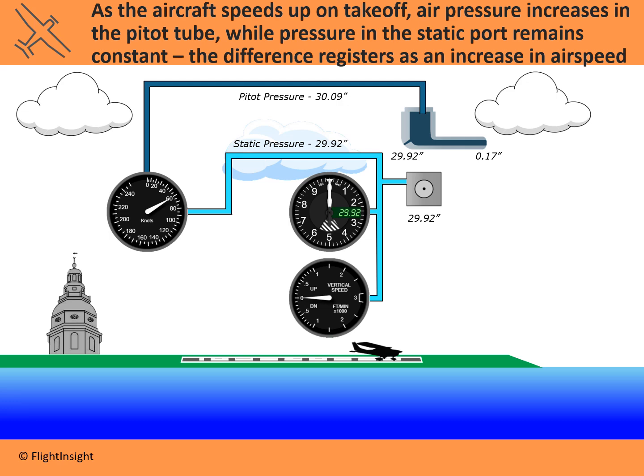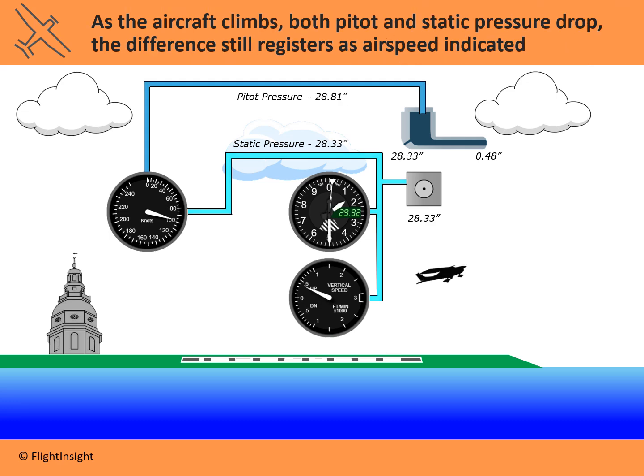Meanwhile, no change is registered on the altimeter or the vertical speed indicator because we haven't climbed or descended yet. Now, as the aircraft rotates, leaves the ground, and starts to climb, it's going to get into higher and therefore lower pressure air. Both the static system and the pitot system will register a reduction in air pressure. As we climb, the air gets thinner. So the air coming through the static system is going to get lower and lower, but that same reduction is going to be experienced by the pitot system as well. That little outflow drain on the back is going to let static air pressure into the system.